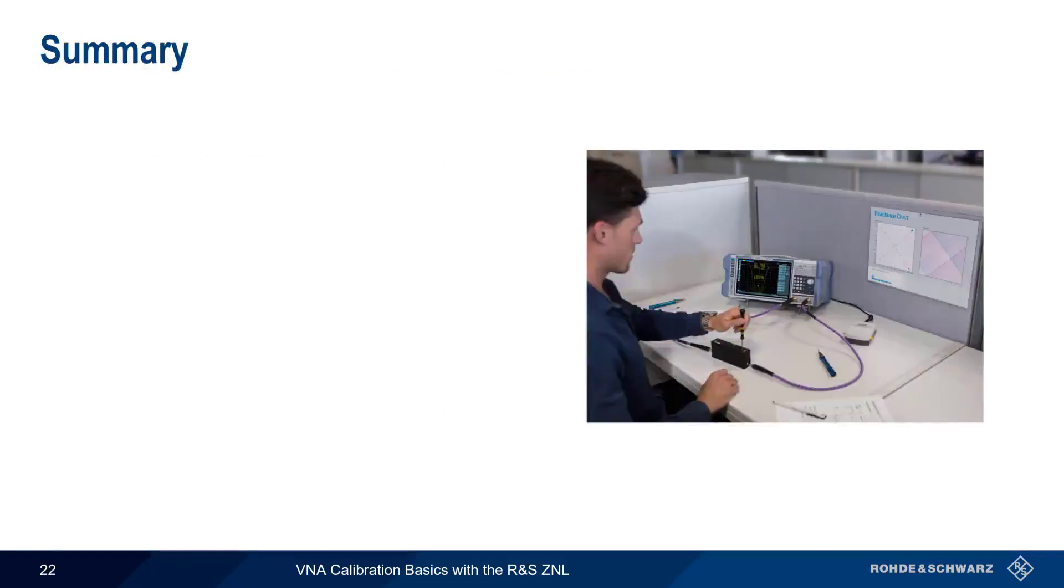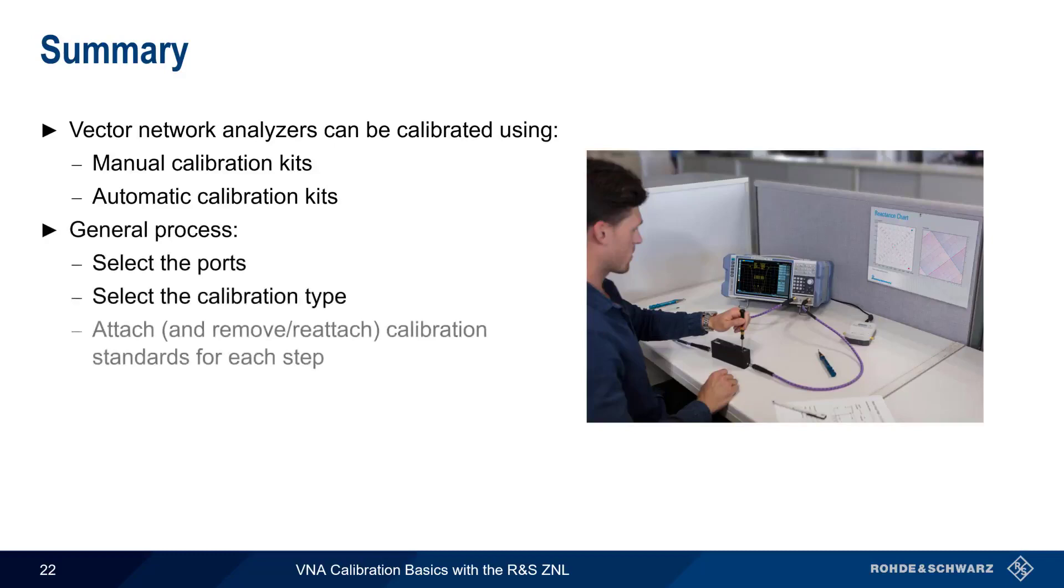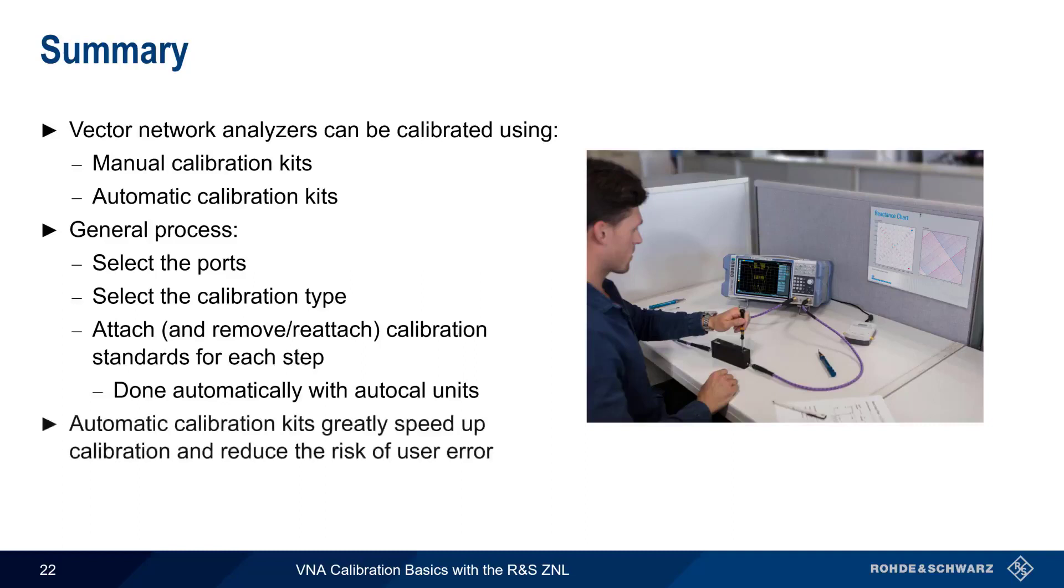Let's summarize what we've covered. Vector network analyzers can be calibrated using either manual calibration kits or automatic calibration kits. The general calibration process involves selecting the ports and the calibration type, then attaching and, if necessary, removing and reattaching the calibration standards at each step. This is done automatically with AutoCal units. And as we've seen, an automatic calibration unit can greatly reduce calibration time as well as the risk of user error.